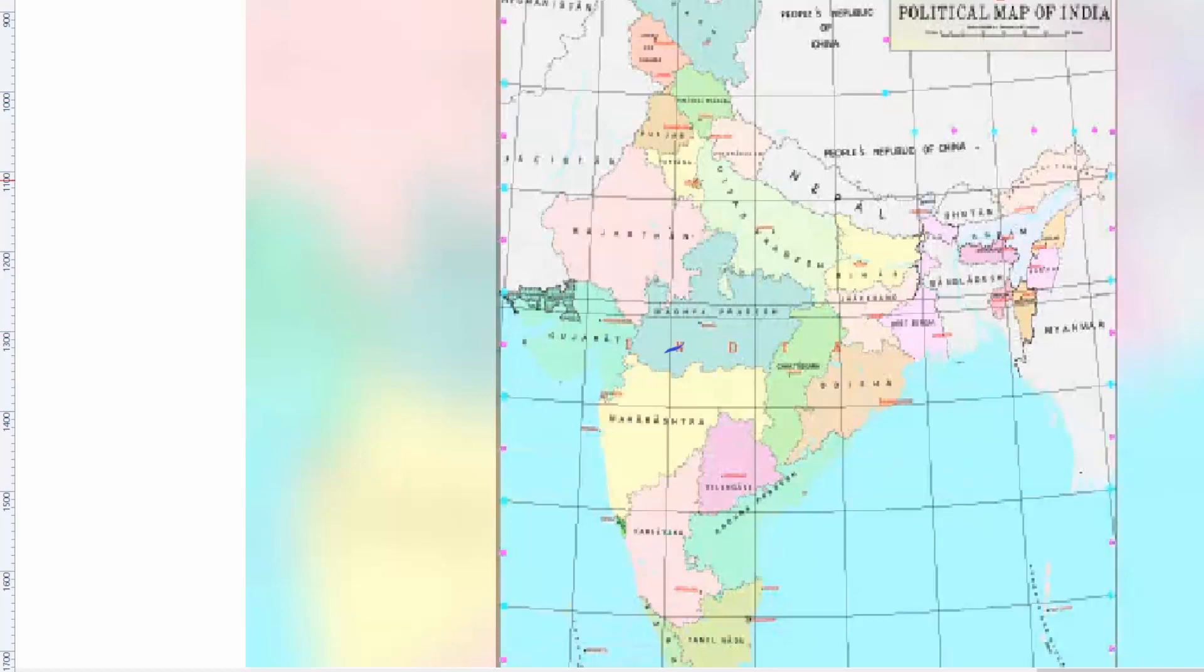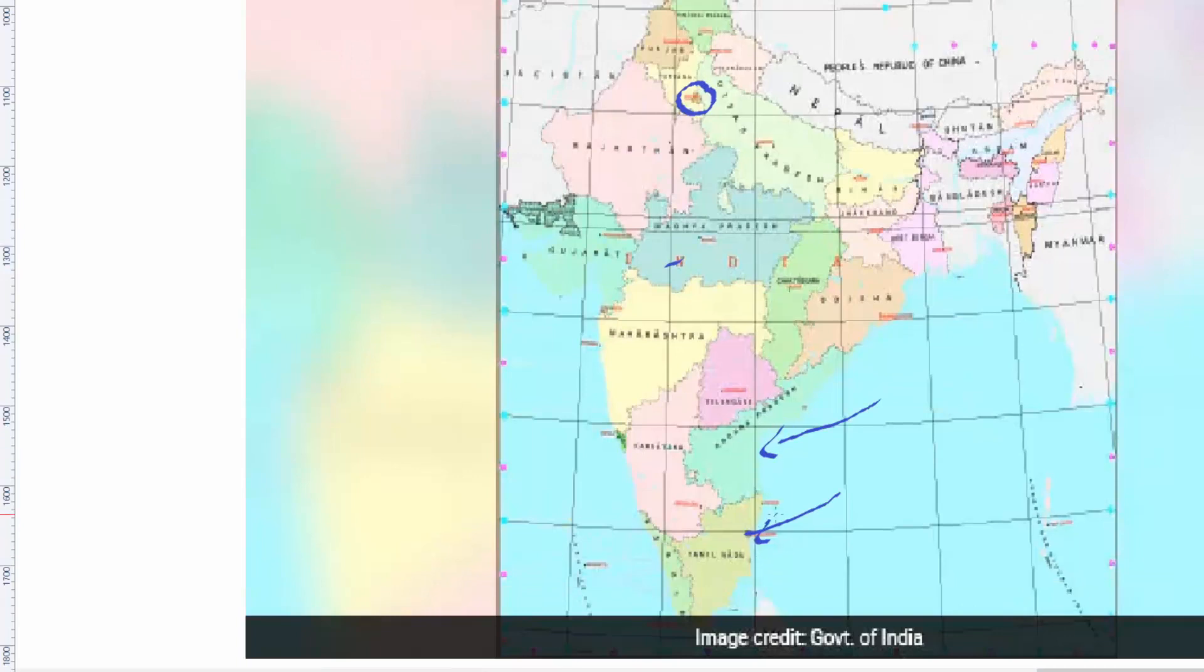And this is what photochemical smog forms during summer time. So this is the difference between smog and photochemical smog.